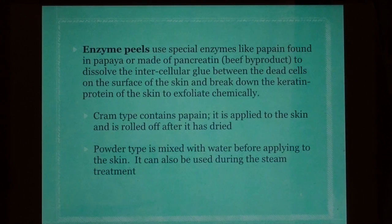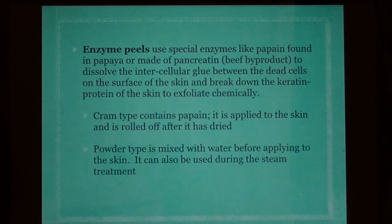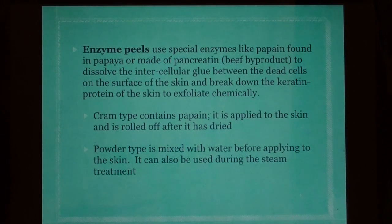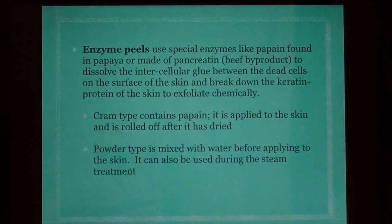Enzyme peels also break down the keratin protein of the skin to exfoliate chemically. The cream type contains papain and is applied to the skin, then rolled off after it has dried. The powder type is mixed with water before applying and can also be used during steam treatment.